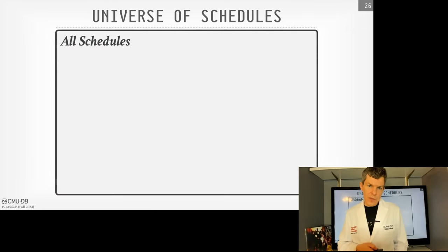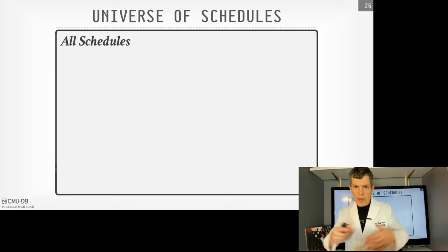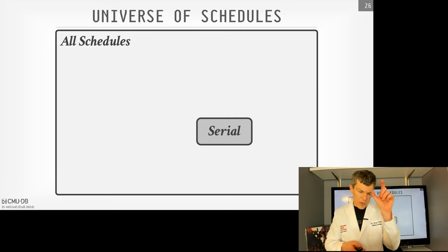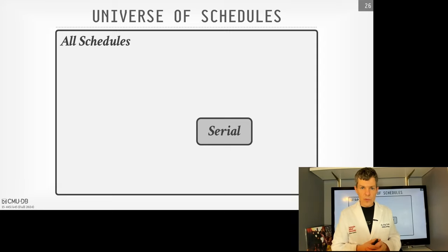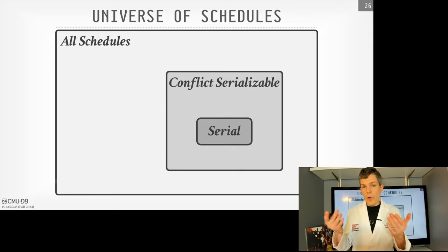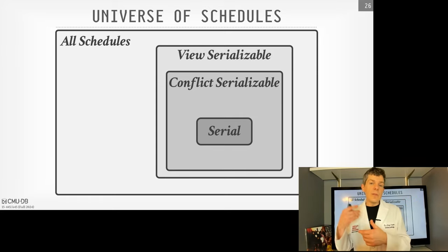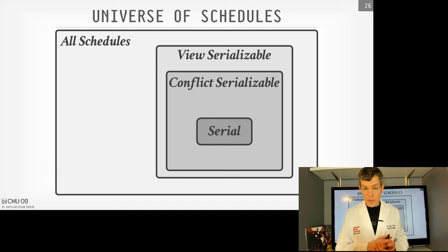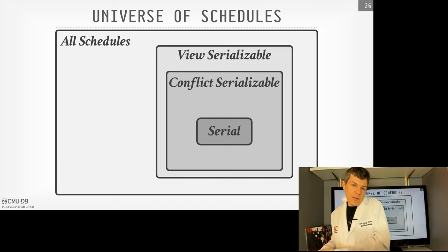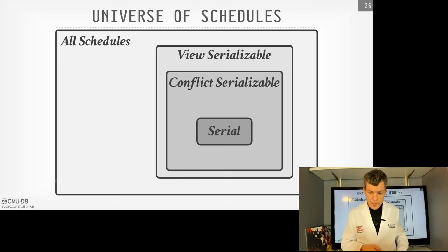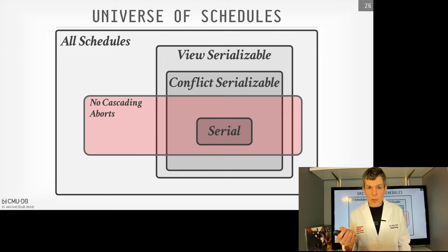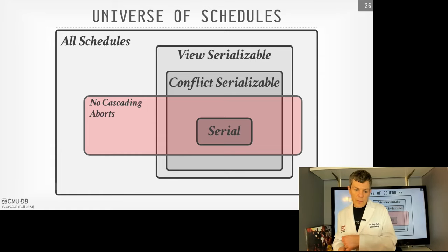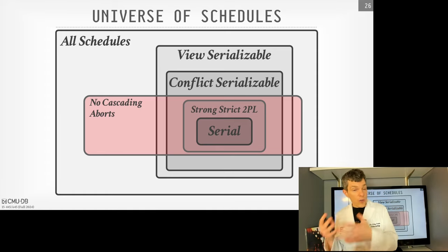Going back to the schedule space diagram: the large outer region is all possible schedules. A subset is serial schedules. Around them are conflict-serializable schedules, and around those are view-serializable schedules. Any conflict-serializable schedule is implicitly also view-serializable. There's also a region for no-cascading aborts, which overlaps with the serializable and serial ones. Within the conflict-serializable region and also bounded by no-cascading aborts, we have the strong strict two-phase locking schedules.